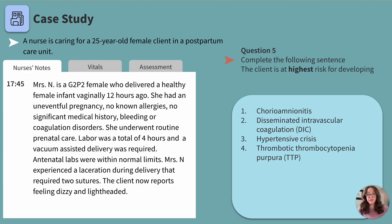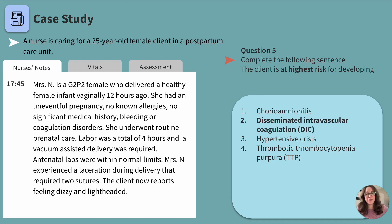Question five: complete the following sentence by choosing from the list of options. The client is at highest risk for developing: one, chorioamnionitis; two, disseminated intravascular coagulation; three, hypertensive crisis; or four, thrombotic thrombocytopenic purpura. Pause, review, and make your selection. The correct answer is disseminated intravascular coagulation. This client is at highest risk for developing DIC as a result of severe postpartum hemorrhage. DIC is caused by a disruption in the body's ability to clot normally and is a life-threatening complication.